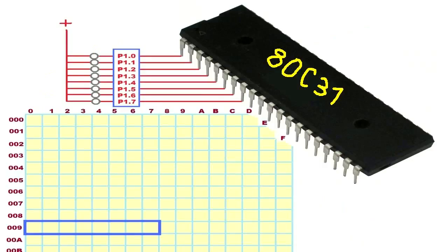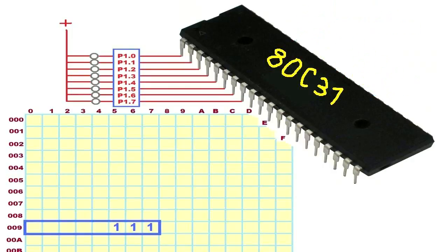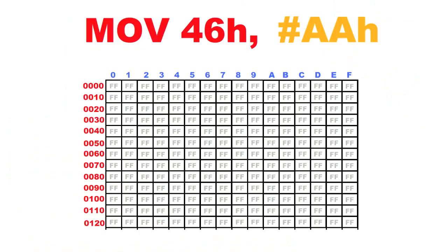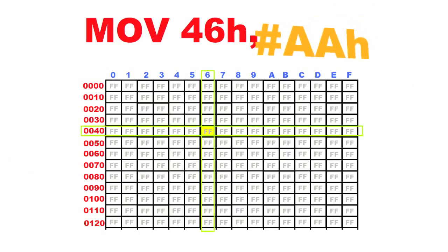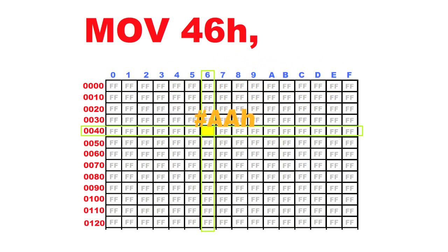Entering the value 0 in register P1 on the first position this time was done using the MOV command. MOV means move, and it moves a bit or byte from the place marked as source to destination.